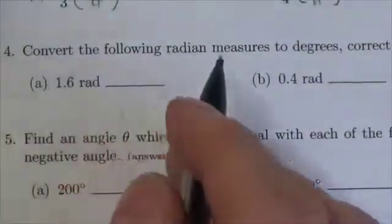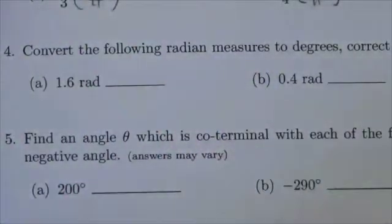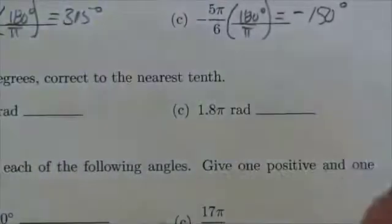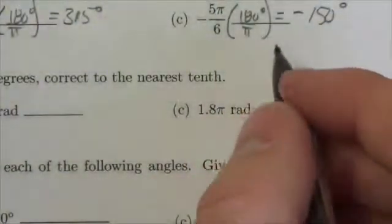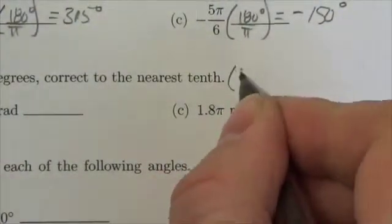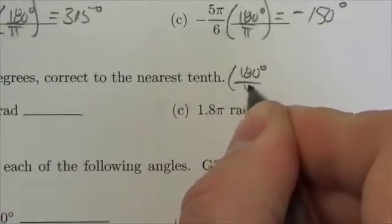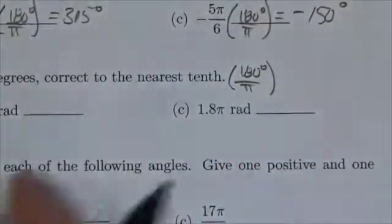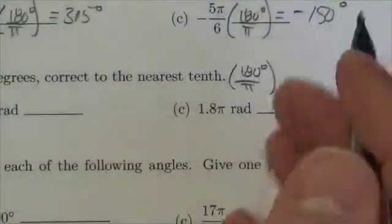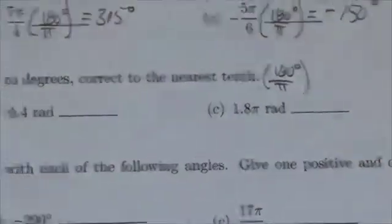This question asks us to convert the following radian measures to degrees, correct to the nearest tenth. Now remember that the conversion factor to degrees is 180 degrees over π. Because that ratio there, although not numerically equal to 1, is conceptually equal to 1.